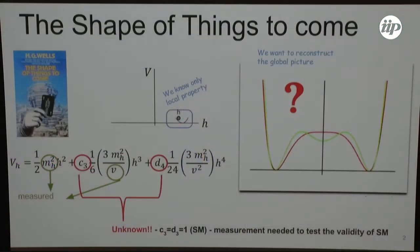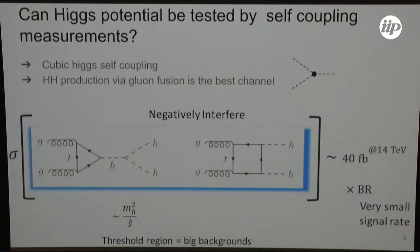So measurement of these couplings is needed to test the validity of the standard model. We only know what the local properties of the Higgs are; we do not really understand what the global picture looks like. So if you go away from the minimum of the Higgs potential, what happens? How does the shape look? To answer this question, there are different ways of looking at it. First, we try to measure the Higgs self-coupling at the colliders.